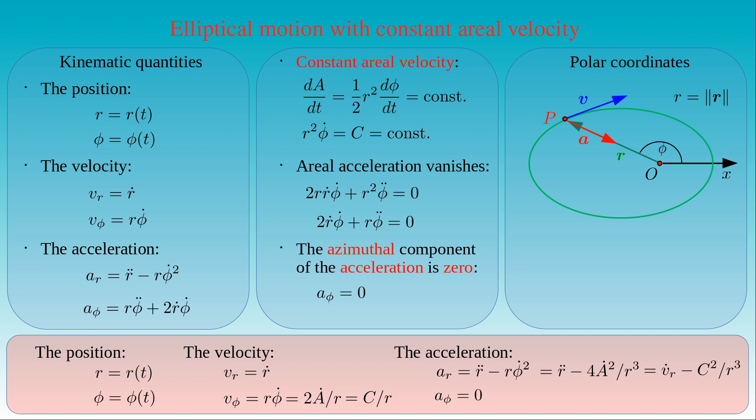Minus the square of the constant C divided by the cube of the radial coordinate. As we have demonstrated, the azimuthal component of the acceleration vanishes in the case of constant aerial velocity. Since the acceleration has only a radial component, we talk about central motion, that is the acceleration always points towards a central point, which is one of the foci of the ellipse. However, the vanishing azimuthal component of the acceleration does not mean that the traveling body has no acceleration along its orbit.